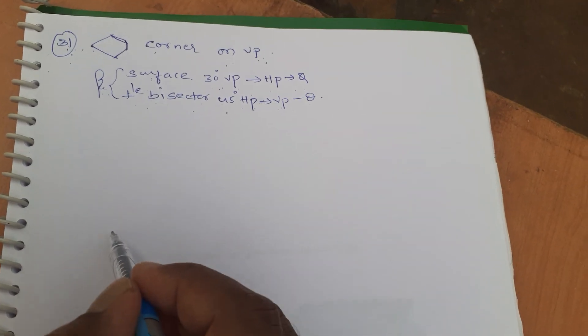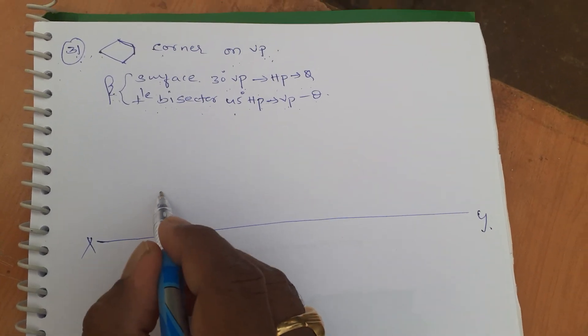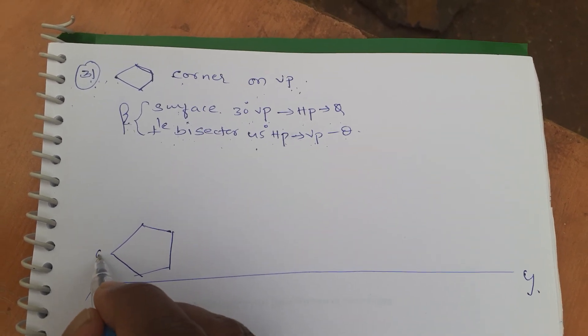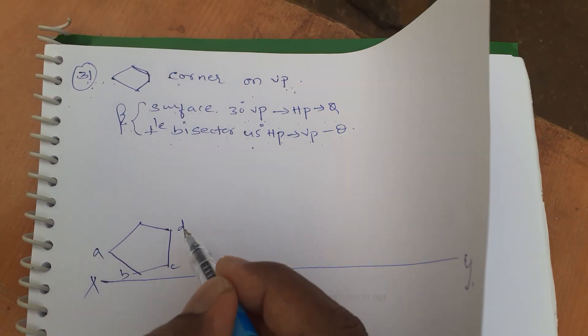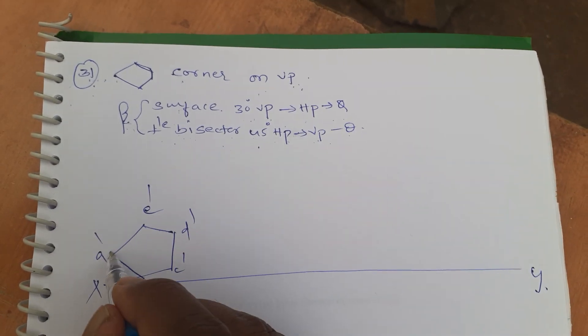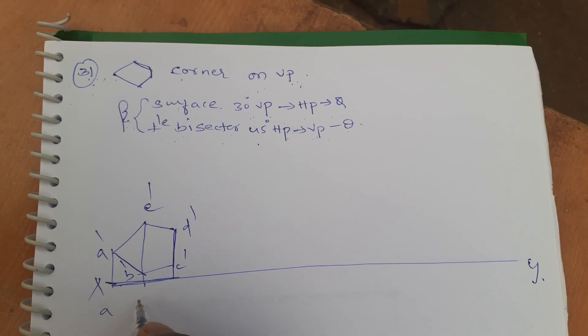So just see here, we will draw the XY line. Resting on a corner means start with the corner. Draw projections a, b, c, d, e with dashes for all the projections. You all know these things.